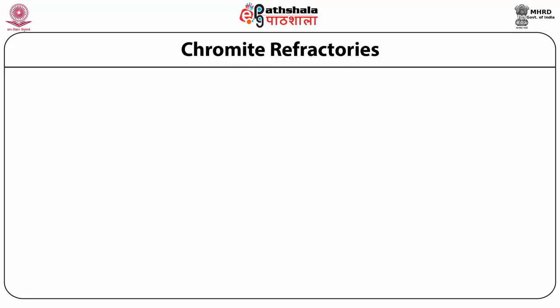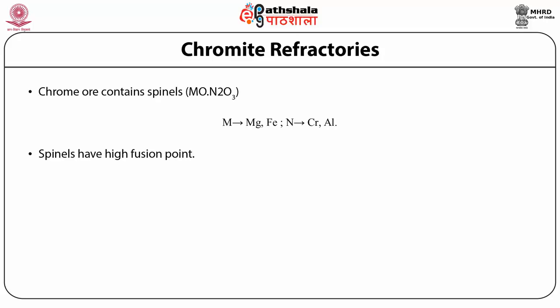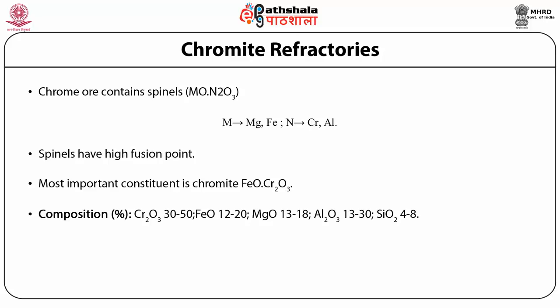Chromite refractories: chrome ore consists of highly refractory spinel with the general formula MN2O3, where M is a divalent metal like magnesium or iron, and N is a trivalent metal like chromium or aluminium. The compound chromite (FeO·Cr2O3) is the major constituent. The ore also contains hydrated magnesium silicate, usually the mineral serpentine having the composition 3MgO·2SiO2·2H2O. The usual range of composition of chromite ore is given in a table — for Cr2O3 the percentage is 30 to 50% and for SiO2 it is 4 to 8%.